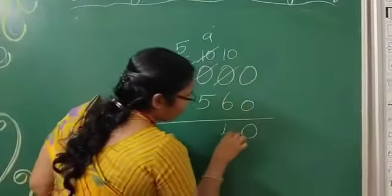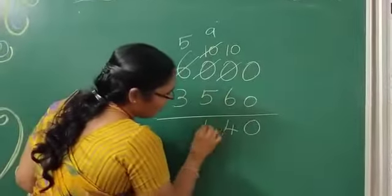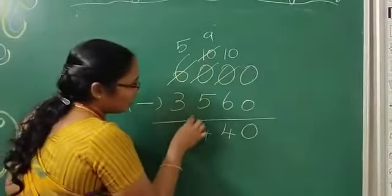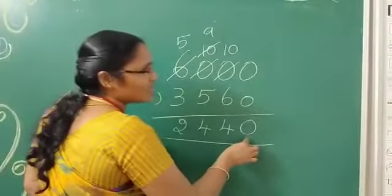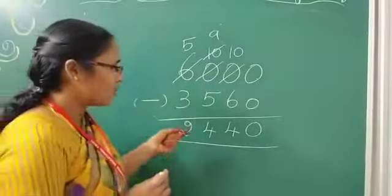10 minus 6? 4. 9 minus 5? 4. 5 minus 3? 2. So 2440 roses than lilies.